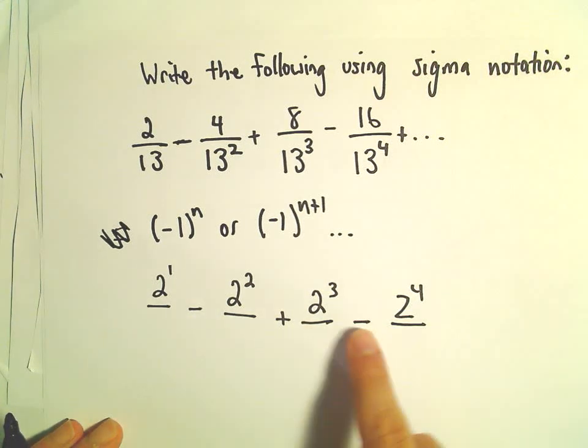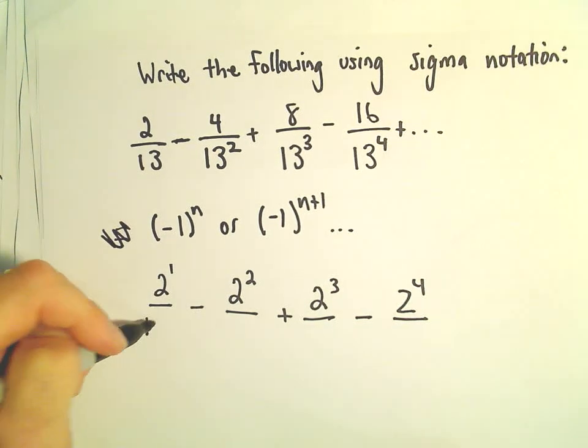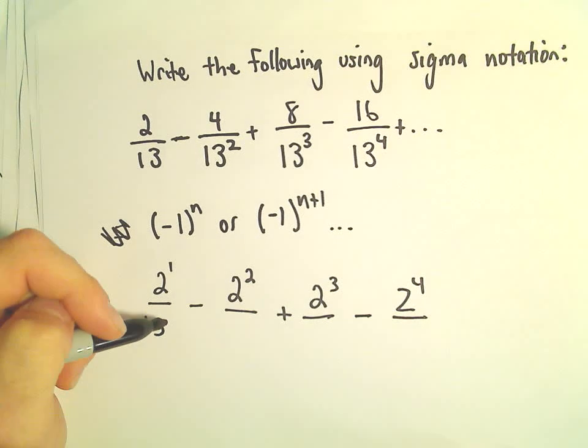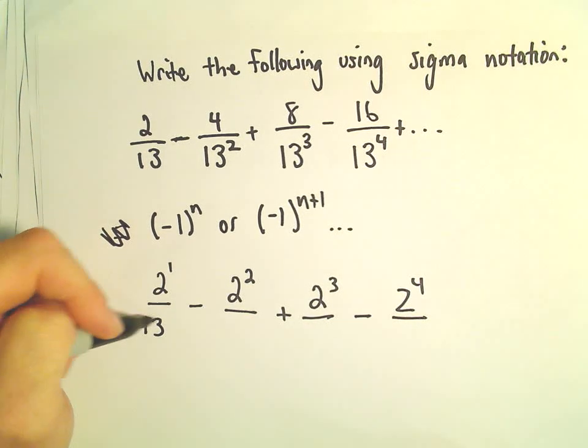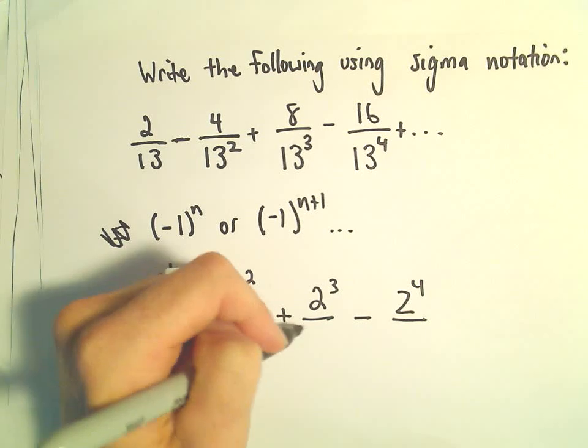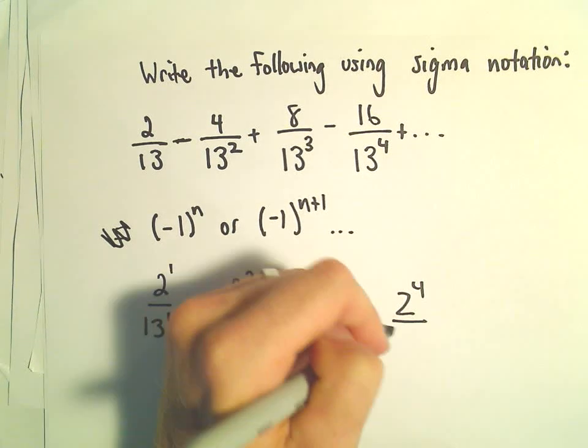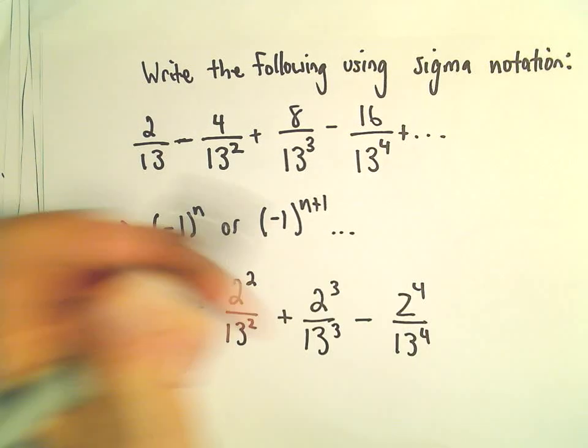We talked about the alternating signs. And then in the bottom, it's pretty clear. We've got powers of 13: 13¹, 13², 13³, 13⁴, etc.